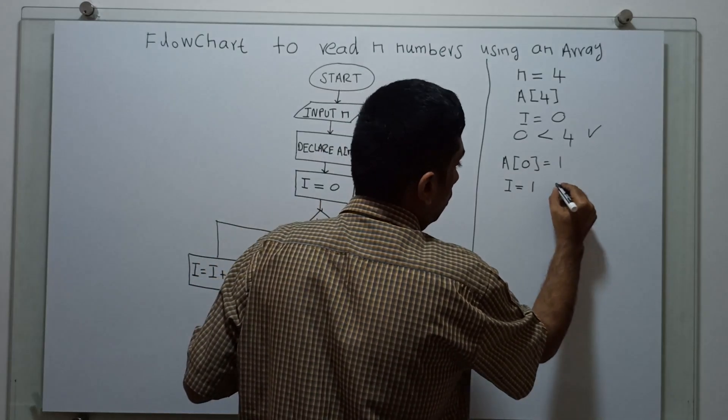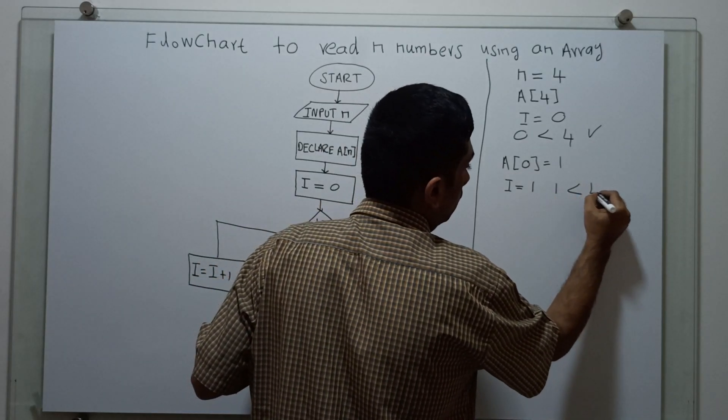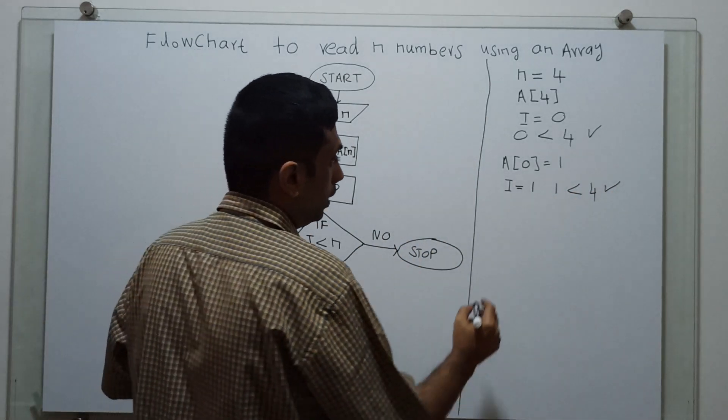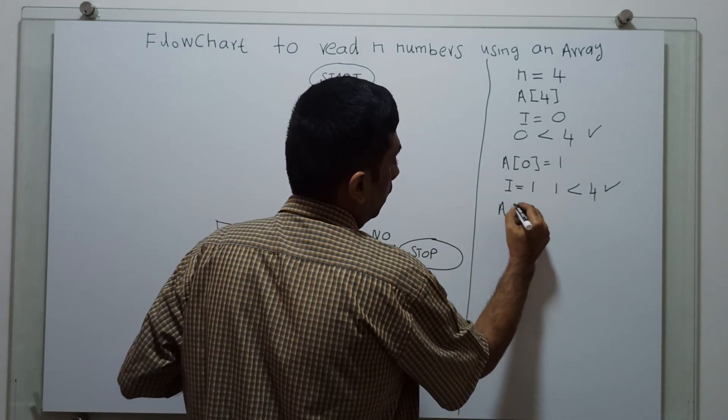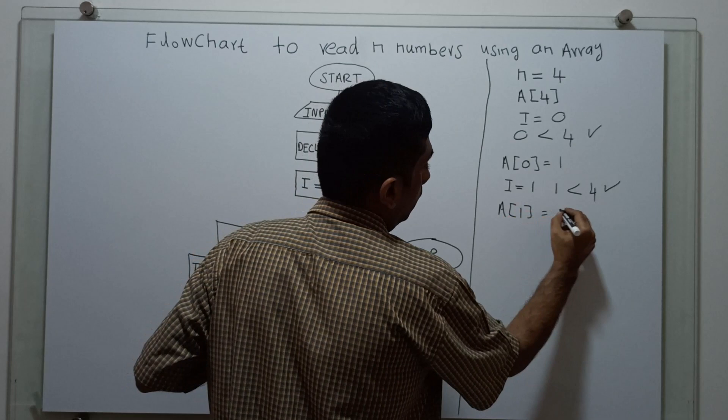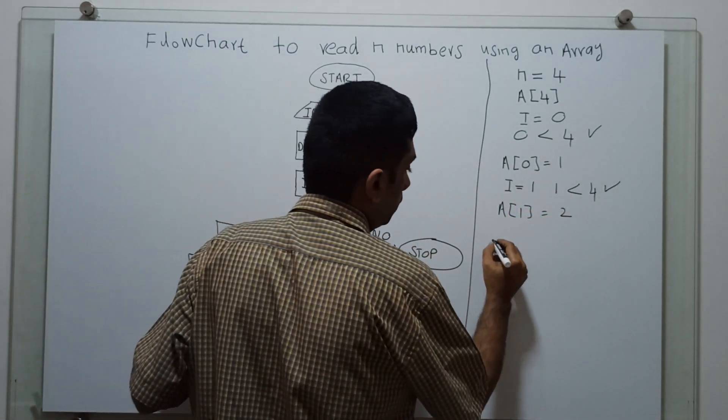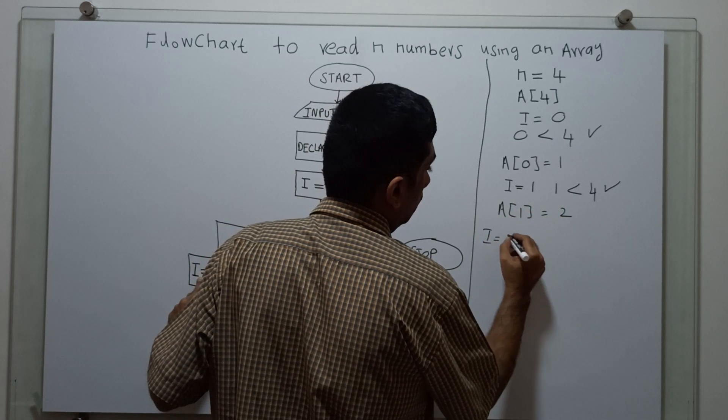Then, I am checking. 1 less than 4. The condition is true. I am putting a of i. A of 1. I am giving a value 2. i equal to i plus 1. i equal to 2.